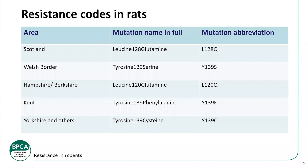These mutation codes are what you'll see when looking at resistance mapping or resistance information. For Scotland: the amino acid was leucine, the switch happened at cell 128, and it mutated into glutamine — the code is L128Q. Interestingly, G was already taken as an abbreviation, so glutamine was given Q instead, which is why these abbreviations can seem inconsistent. The last strain to be found was the Yorkshire strain — named after where it was first identified, though these strains are now being found in more areas around the country.